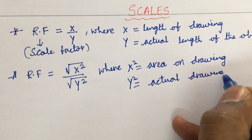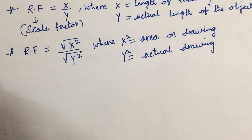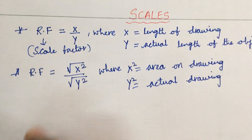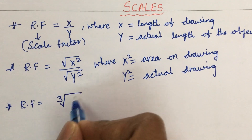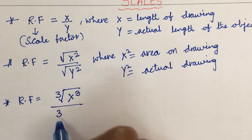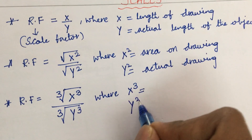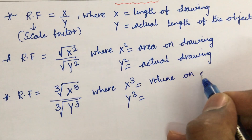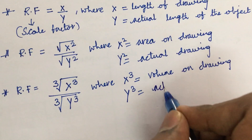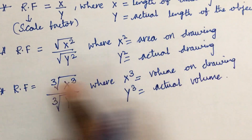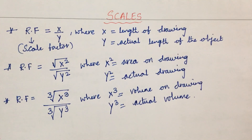The length formula applies when measurements are in centimeters, meters, or decimeters. Sometimes volume problems are also asked, given in liters. In that case, you use the cube root formula: RF = ∛(x³/y³), where x³ is the volume on the drawing or model, and y³ is the actual volume. Identify which is the drawing volume and which is the actual volume to work out the RF correctly.